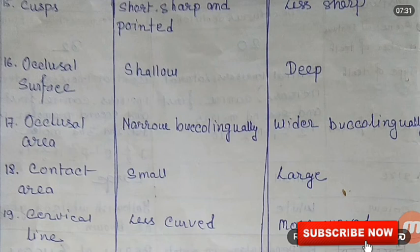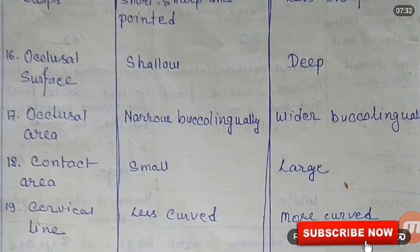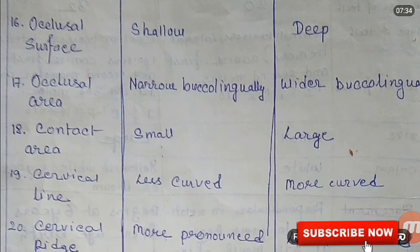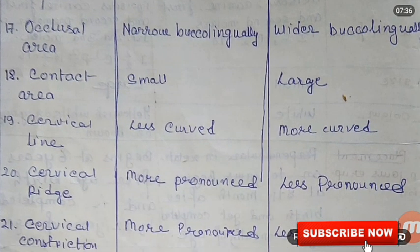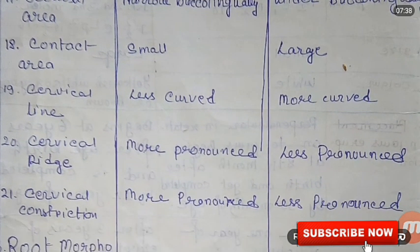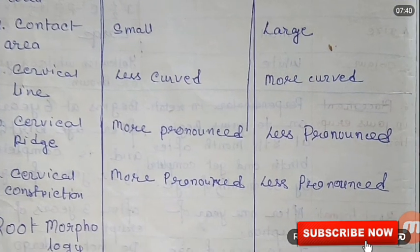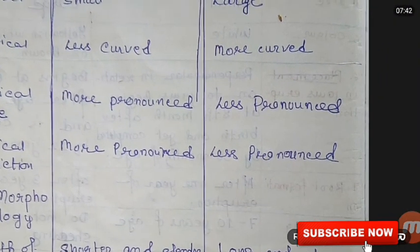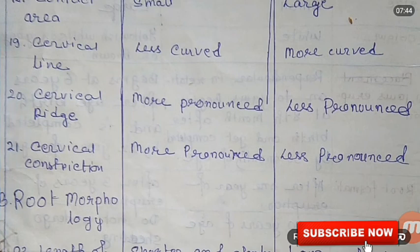The contact area is small in deciduous teeth and large in permanent teeth. The cervical line is less curved in deciduous teeth and more curved in permanent teeth. The cervical ridge is more pronounced in deciduous teeth and less pronounced in permanent teeth.